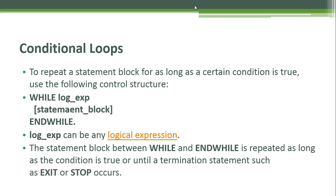For conditional loops, to repeat a statement block for as long as a certain condition is true, use the following control structure: WHILE with a logical expression, then end with END WHILE. The logical expression can be any logical expression, and the statement block between WHILE and END WHILE is repeated as long as the condition is true or until a termination statement such as EXIT or STOP occurs.